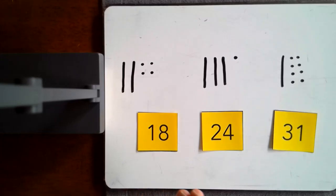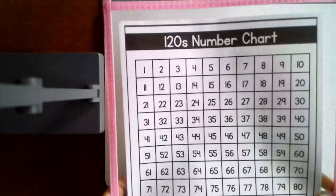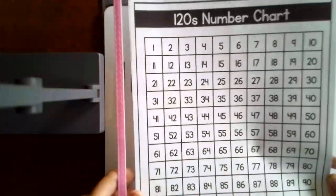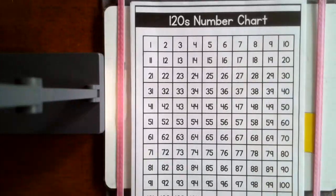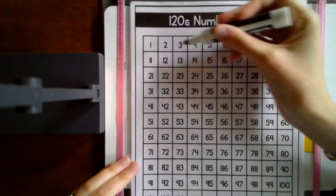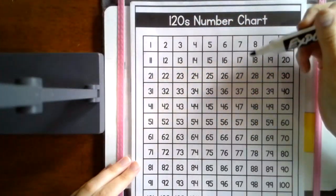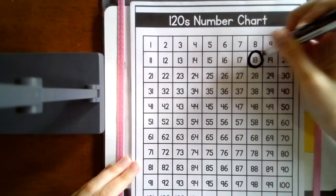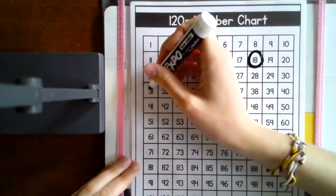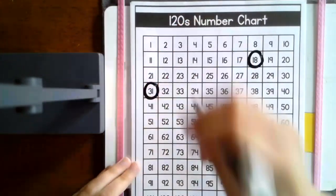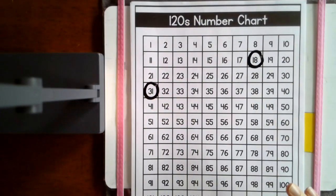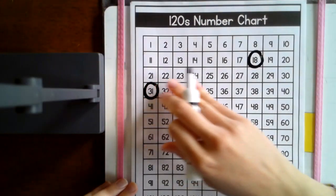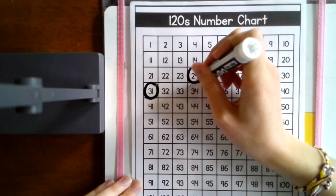I'm going to check this now on my 120 number chart and see if what I found agrees. So what I need to do is I'm going to find each of those numbers on the 120 chart. Looking for 18, 31 would be in the 30 row. And I'm looking for 24. Look in the 20 row.